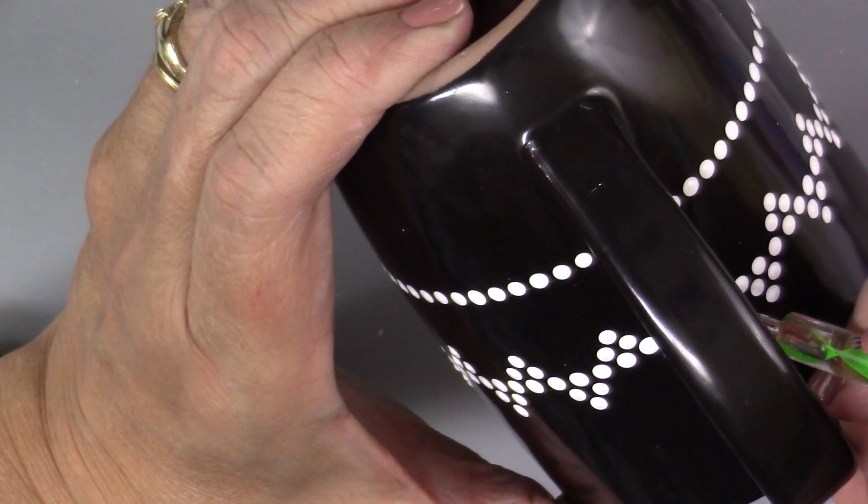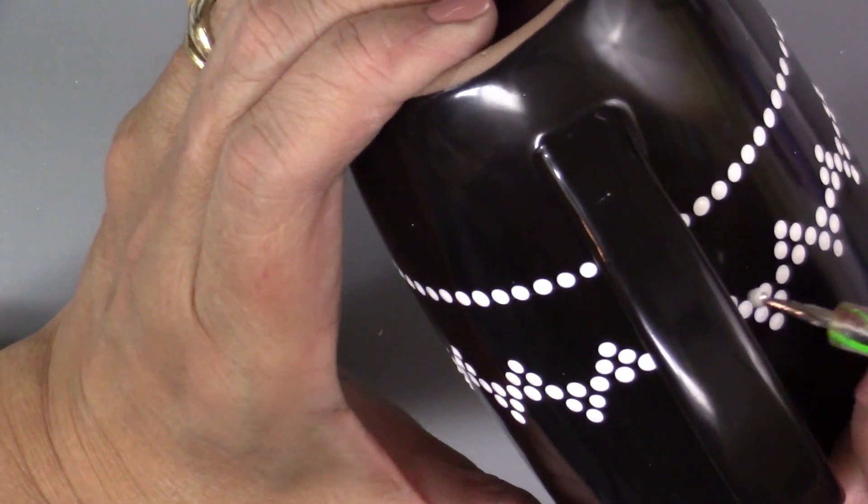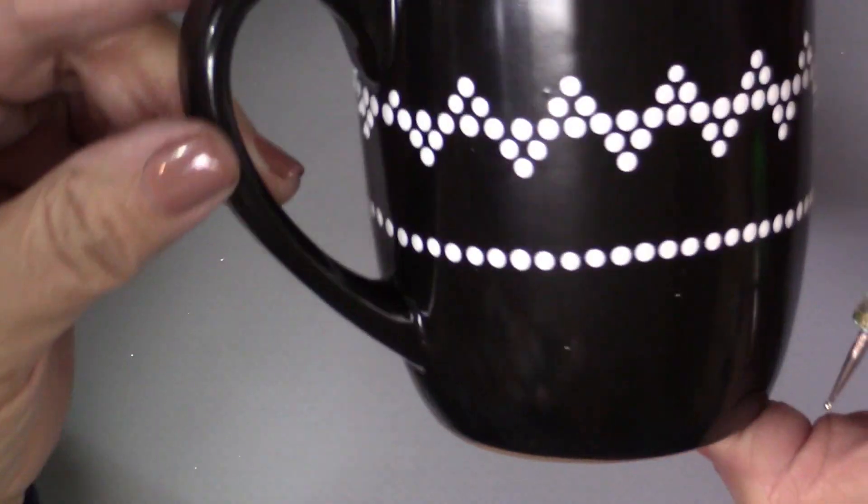This is where you can see I'm trying to get underneath that handle. And you can decide if you want to stop before the handle. I think if I were to do this again, I might stop before the handle.